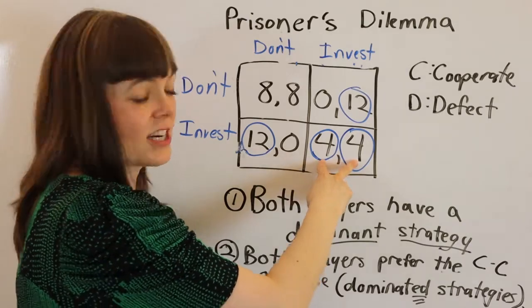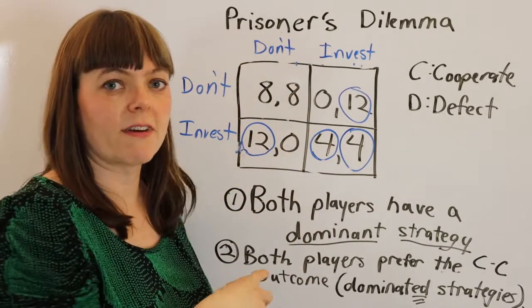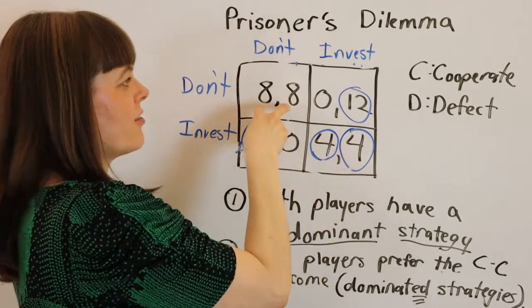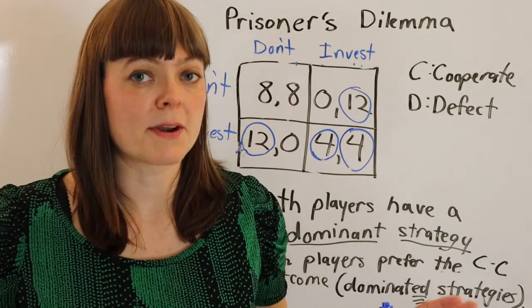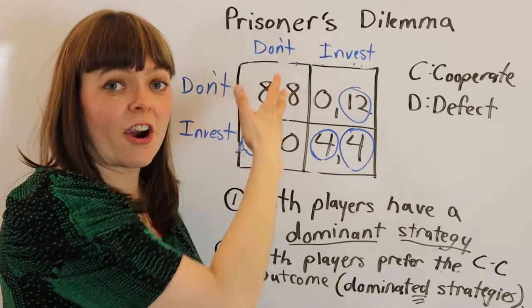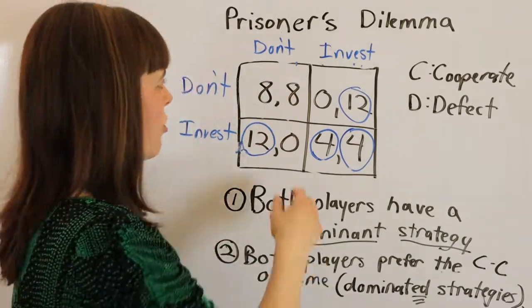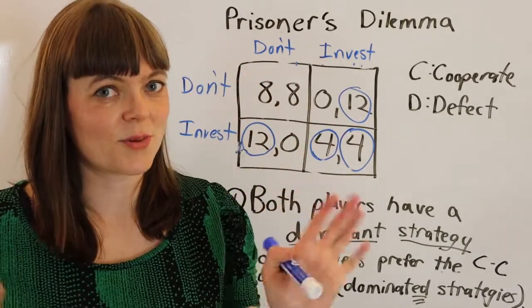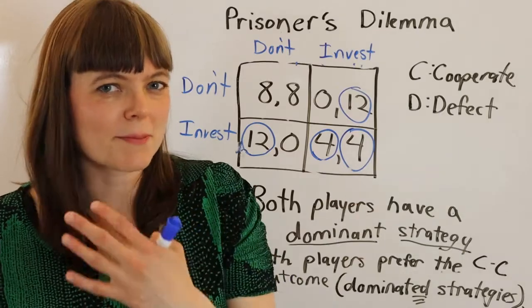So even though the Nash equilibrium here is for both firms to invest, both firms prefer the situation where neither of them invested. They're going to make more money that way. This is just really hard to sustain because of course, if they try to agree not to invest, sort of colluding behind the scenes, the other firm is going to say, wait, I should, it would be better for me to invest than I get all the customers.